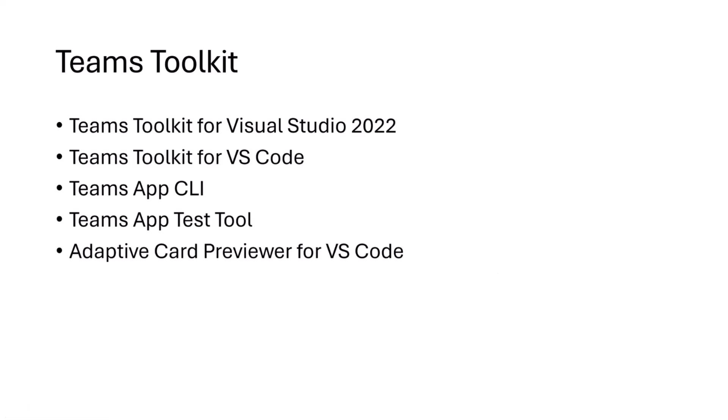More practically, how is it packaged? We package all of those things as extensions in Visual Studio and VS Code, and we also have a CLI which we call the Teams App CLI. We have two additional tools: the Teams App Test Tool - the simulator-like thing I mentioned - and the Adaptive Card Previewer for VS Code, another extension to help you design-time preview adaptive cards. That's the main things we package and release as part of Teams Toolkit.